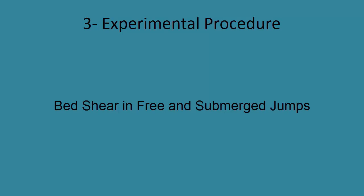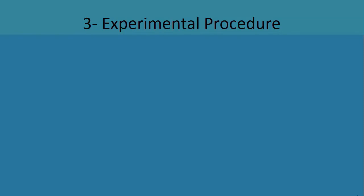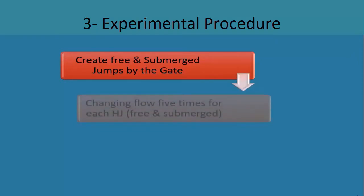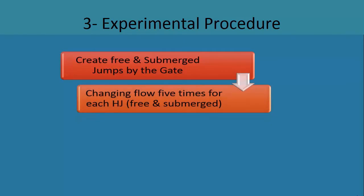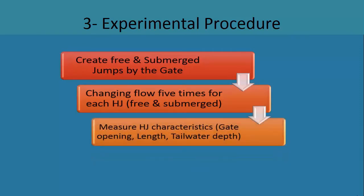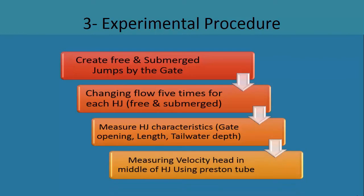To calculate bed shear in free and submerged jumps, our steps were as follows. First, we created free and submerged hydraulic jumps using a vertical underflow gate. To get different Froude numbers, we changed flow five times for each hydraulic jump. For each flow, we measured hydraulic jump characteristics like gate opening to get Y1, and also jump length and tail water depth. Finally, we measured velocity head in the middle of each hydraulic jump.